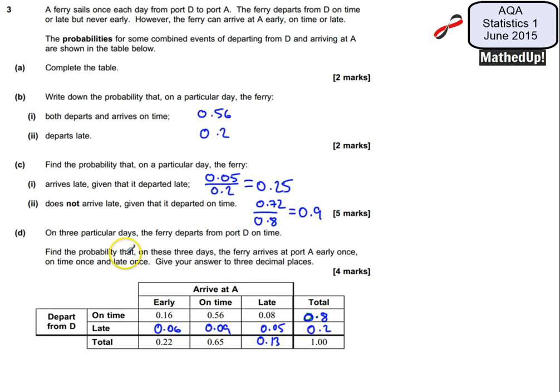So our calculation is going to be, well early is 0.16 so that's going to be 0.16 out of 0.8. On time is going to be 0.56, times that by 0.08 over 0.8.